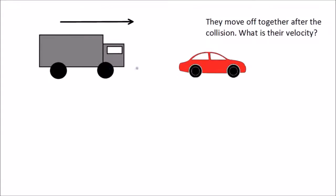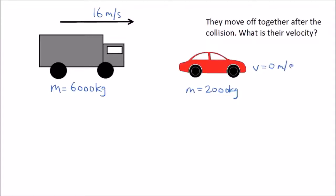So here we have a truck and it collides with a car. The truck has a mass of 6,000 kg — that's 6 tons — and the mass of the car is 2,000 kg. The truck is moving at a speed of 16 meters per second and the car is stationary, so V equals 0 meters per second. The truck smashes into the back of the car and after the collision they move off together, stuck together, and the question asks what is their velocity?